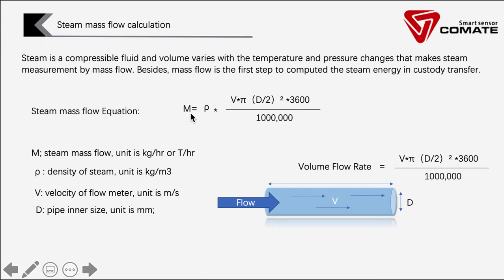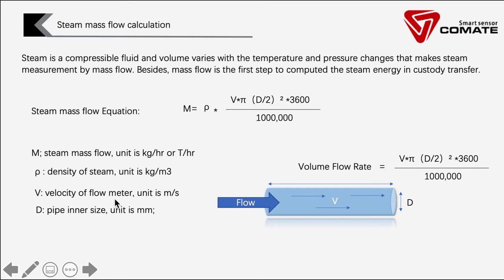Here is the equation. M, the mass flow rate, equals density multiplied by the volume flow rate. Volume flow rate calculates how much flow passes through the pipe cross-section in a certain time, always in one hour. There are two factors to be careful about: one is the velocity of the flow meter, with units in meters per second — for example, some are in the 4 to 16 meters per second range — and the other is the density of steam.